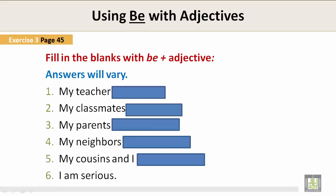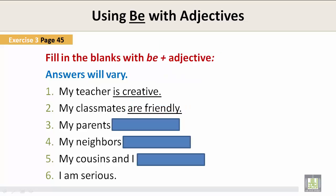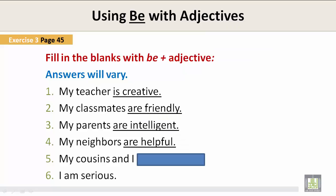Exercise 3, page 45: Fill in the blanks with the verb be plus an adjective. Please note, your answers will vary — this is only an example. Number one: my teacher is creative. Number two: my classmates are friendly. Number three: my parents are intelligent. Number four: my neighbors are helpful. Number five: my cousins and I are athletic. Number six: I am serious.